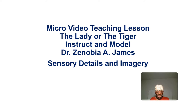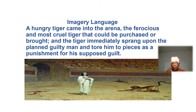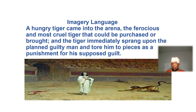We're going to look at some imagery language, put it up, and we can all look at it and read it and see how exciting it can be. Here's imagery language about the tiger. A hungry tiger came into the arena — the ferocious and most cruel tiger. And the tiger immediately sprung upon the accused man and tore him to pieces as a punishment for supposed guilt.